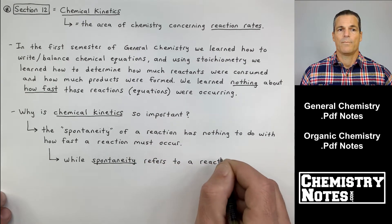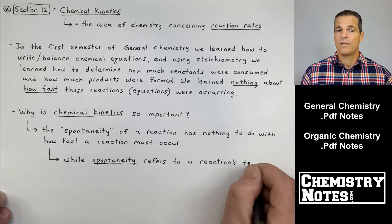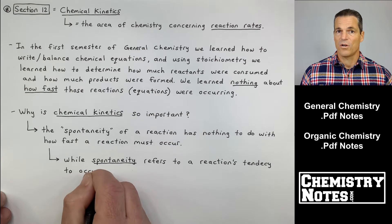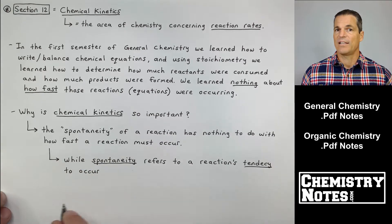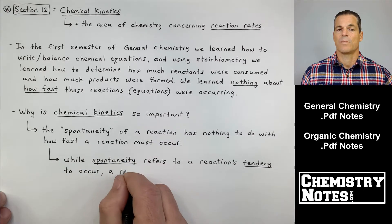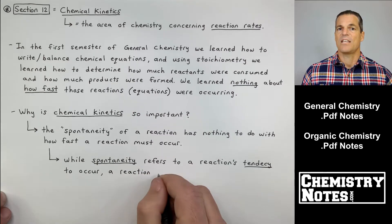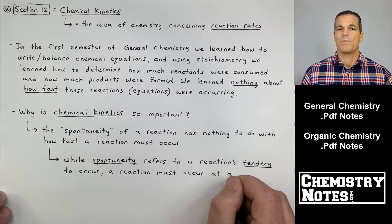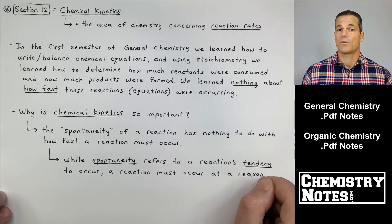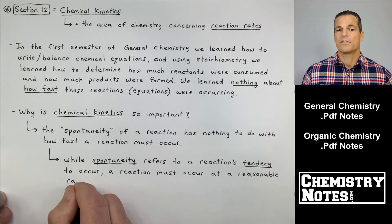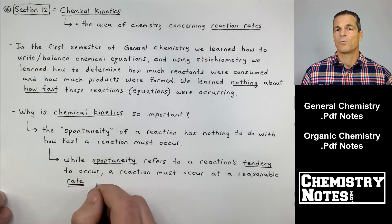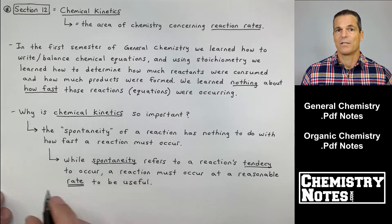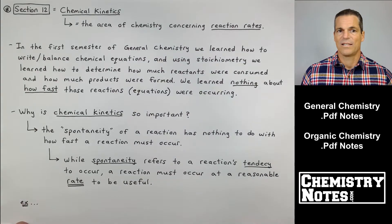While spontaneity refers to a reaction's tendency to occur — and we'll talk about that in Section 16 when we cover spontaneity, entropy, and free energy — a reaction must also occur at a reasonable rate in order for us to consider it a productive one that we can actually utilize.